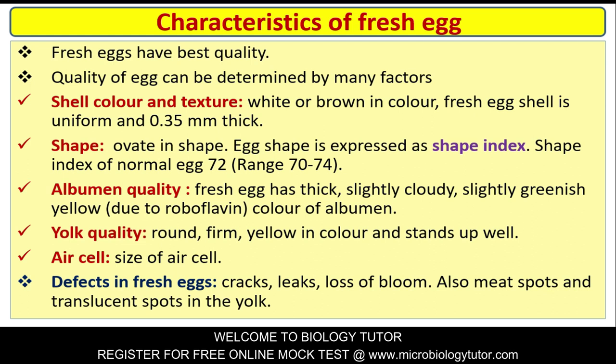Albumin quality: Fresh egg has thick, slightly cloudy, slightly greenish-yellow color due to riboflavin. The yolk is round, firm, yellow in color, and stands up well. The size of the air cell is also an important factor. Defects in fresh eggs include cracks, leaks, loss of bloom, meat spots, and translucent spots in the yolk.